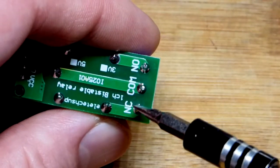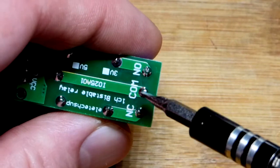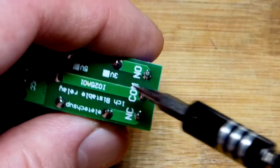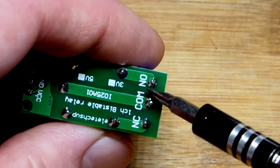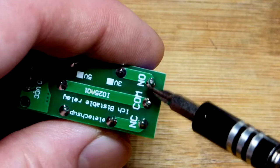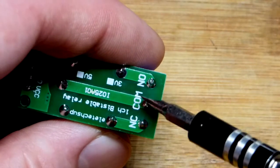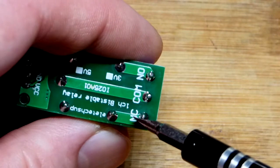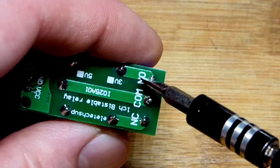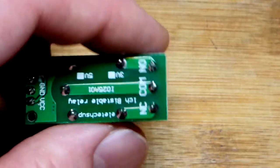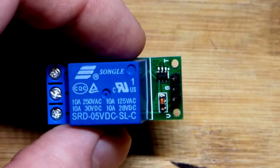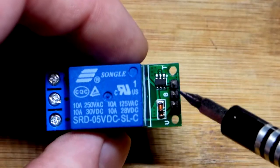If you energize the coil on that side over there, then the two points here are connected and that one's not connected. So normally closed is on, and normally open is off. That's the normal position when the coil is not energized.